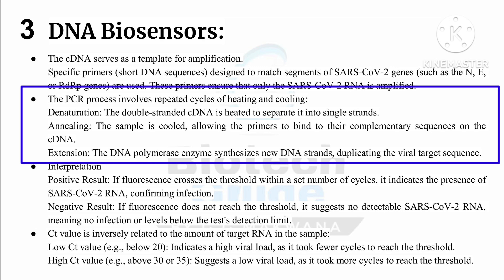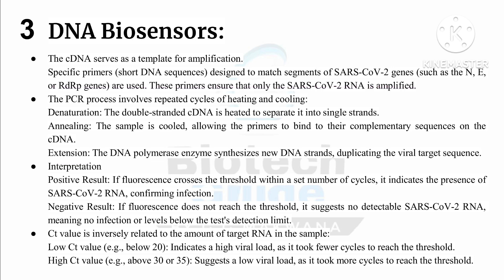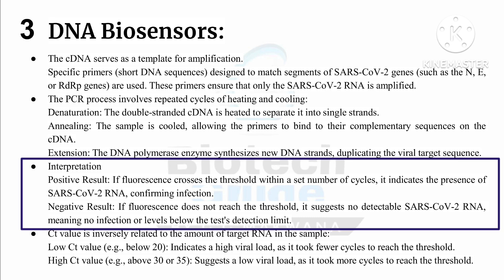The PCR process involves heating and cooling — denaturation, annealing, and extension. At the end, the amount of cDNA is detected and quantified, giving the following interpretation: if the result is positive, the fluorescence crosses the threshold within a set number of cycles, indicating the presence of SARS-CoV-2 RNA confirming infection. When the result is negative, the fluorescence does not reach the threshold, suggesting no detectable SARS-CoV-2 RNA — meaning no infection or levels below the test detection limit.